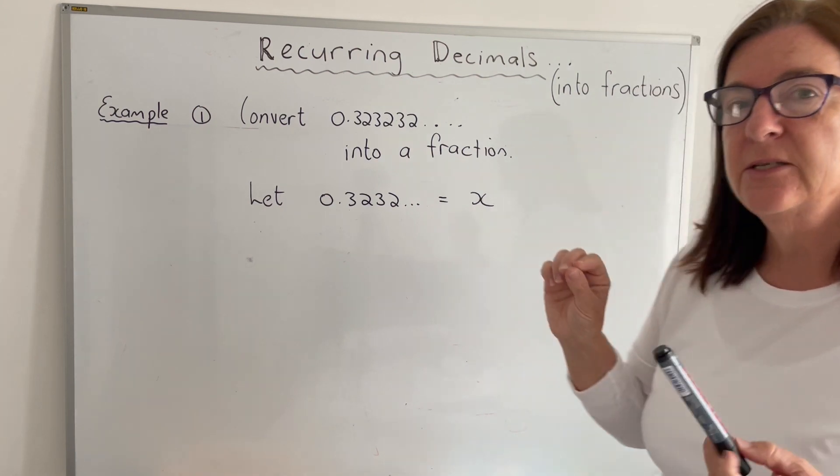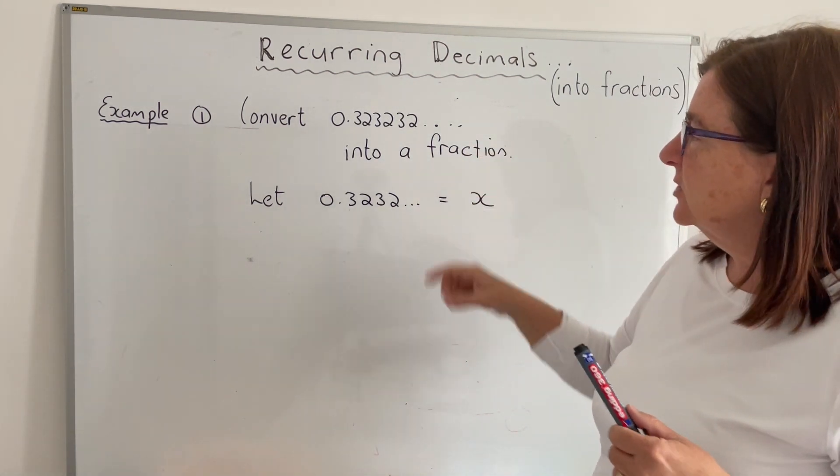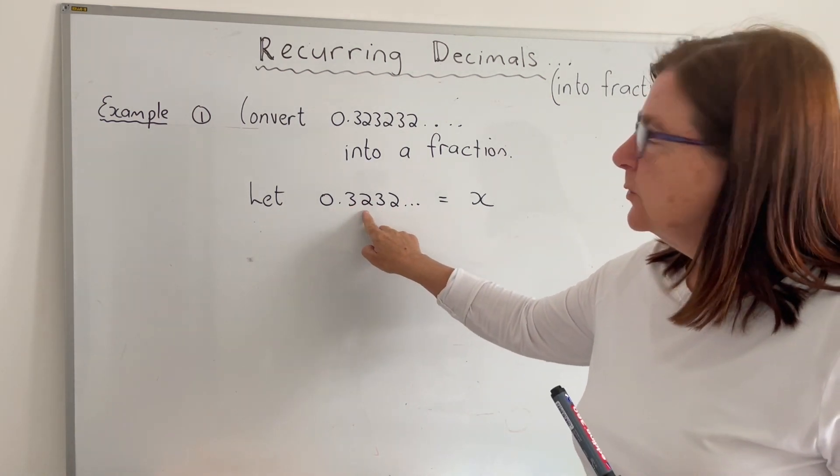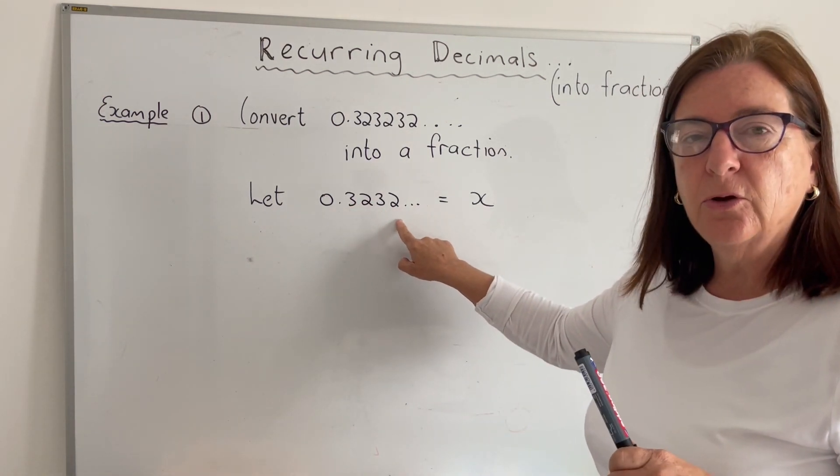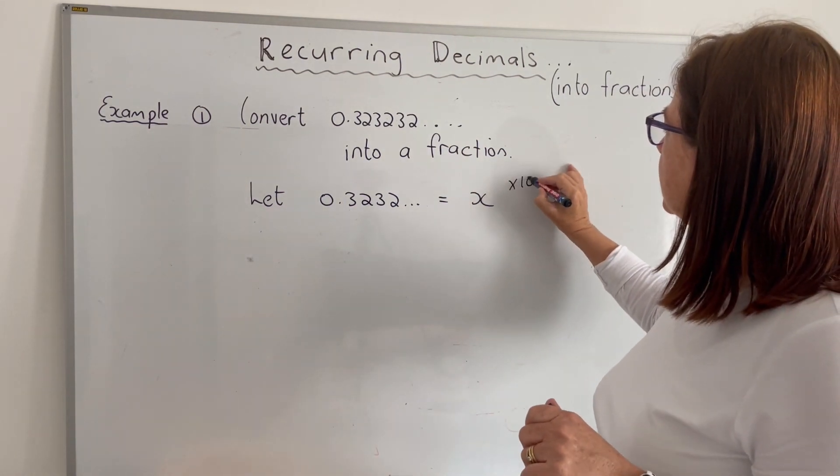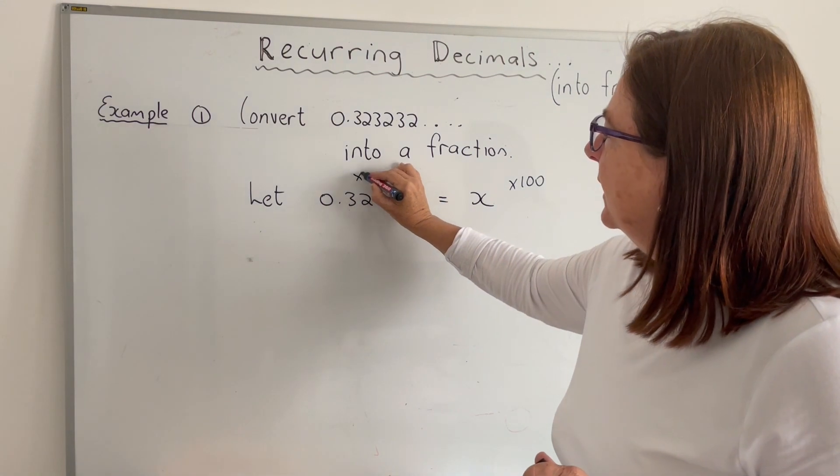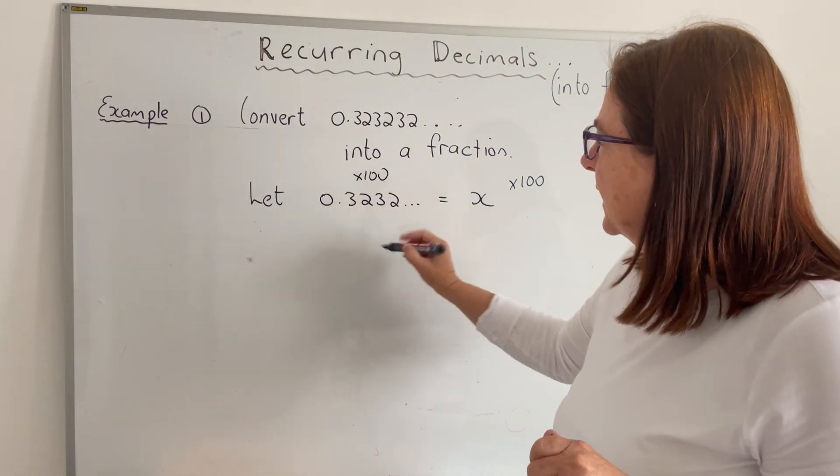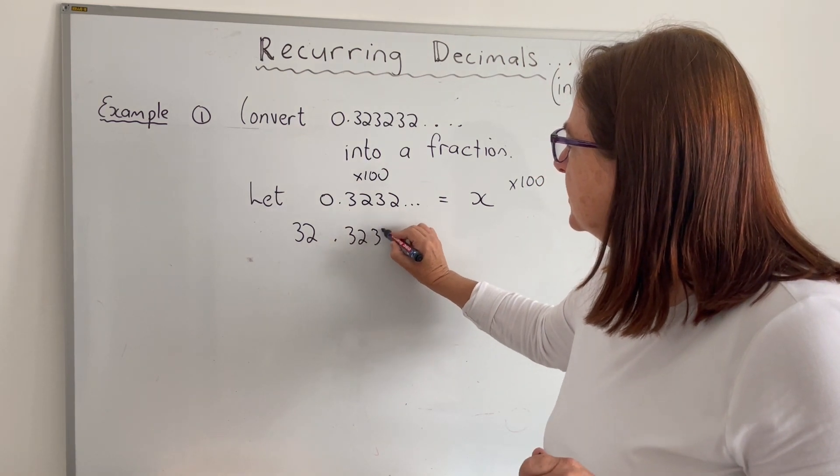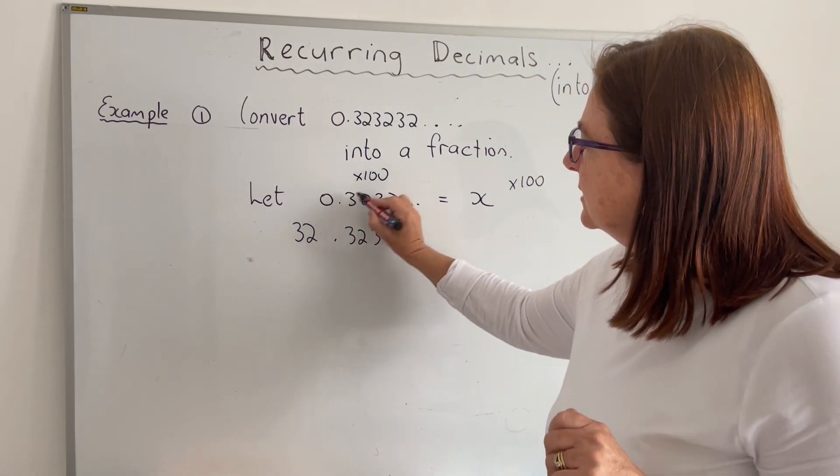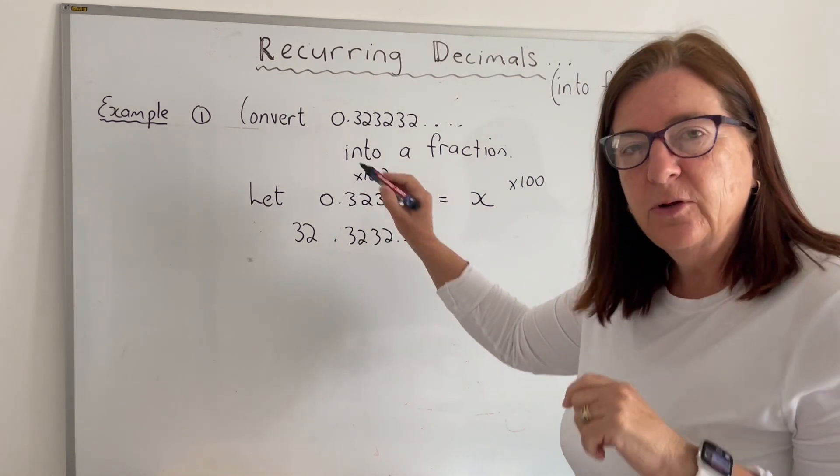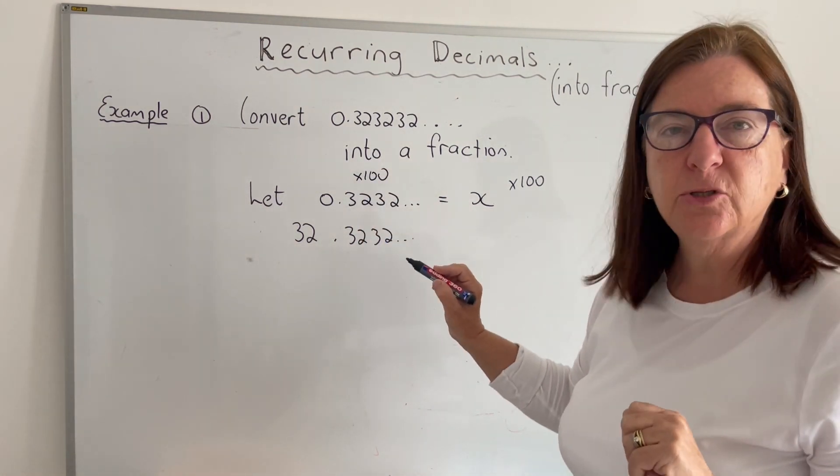The little trick that we do is to help us get to the correct fraction. We multiply it by 100. Because the 32 is recurring, we multiply it by 100, and we always remember multiply both sides by 100. So if I multiply this by 100, I'm going to end up with 32.3232 and so on. And on the right hand side, 100 times x is 100x.